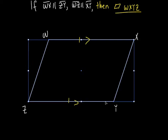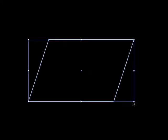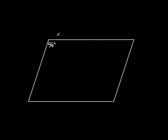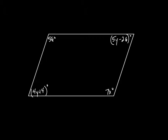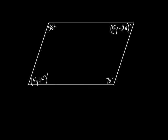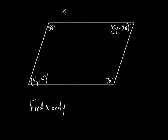Once I know it's a parallelogram, then all that other stuff has got to be true. Let's do an example. This angle right here is 56 degrees, this one is 7x degrees, and this one down here is 4y plus 4 degrees. The problem is worded just a little bit different. On the worksheet before, on 6-2, they told you that this thing was a parallelogram. This time they don't tell you it's a parallelogram — they tell you to find x and y so that it makes this into a parallelogram.